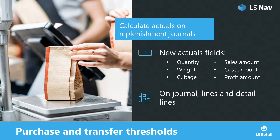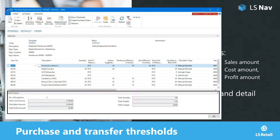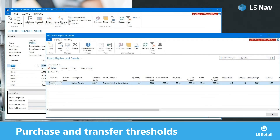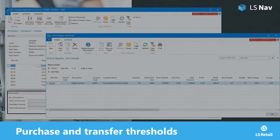On the journal page there is a new fast tab called Information where the new fields are displayed. Of course you can set up which fields should be shown to the users, and you can see this information on line and detail line level as well.